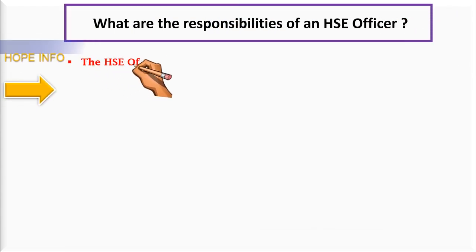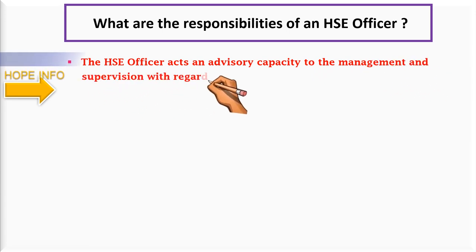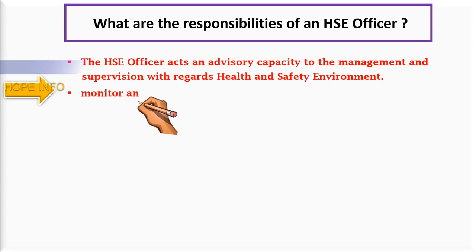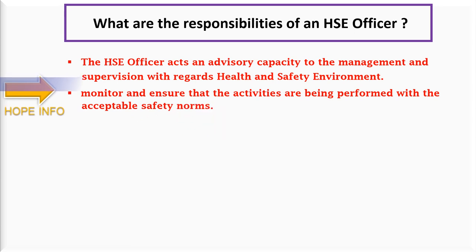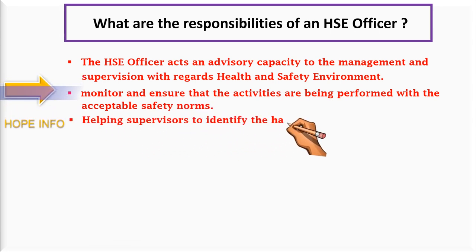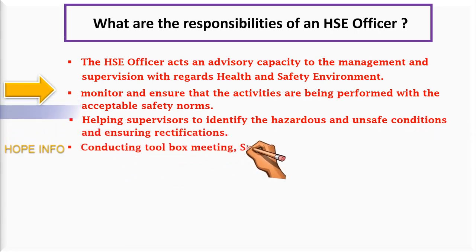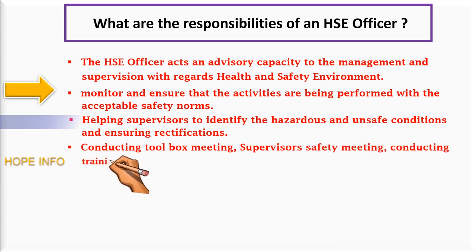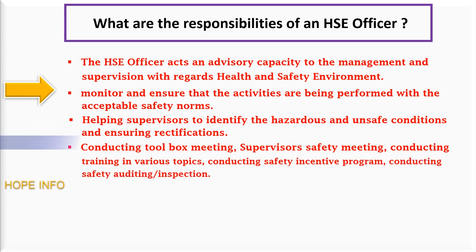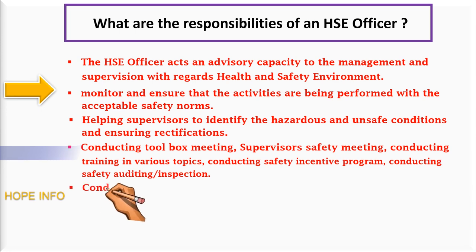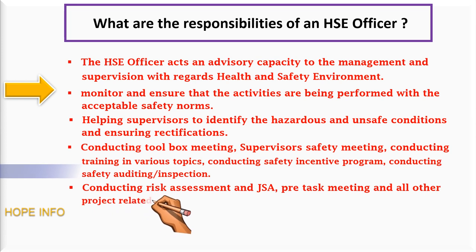What are the responsibilities of the HSE officer? The HSE officer acts in an advisory capacity to management and supervision with regards to health, safety, and environment. They monitor and ensure that activities are being performed within acceptable safety norms, helping supervisors to identify hazards and unsafe conditions, ensuring rectification, conducting toolbox meetings, supervisor safety meetings, conducting training on various topics, conducting safety incentive programs, conducting safety audits and inspections, conducting risk assessments, JSA, and pre-task meetings.